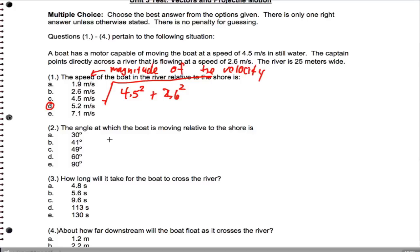Now, when we want to get the angle, let's be careful here. I'm going to draw the shore and we'll draw the river speed, which is 2.6, and the boat speed, which is 4.5. So this is the angle that we actually want to calculate. That's the inverse tangent of 4.5 divided by 2.6. When we do that, it ends up being 60 degrees.